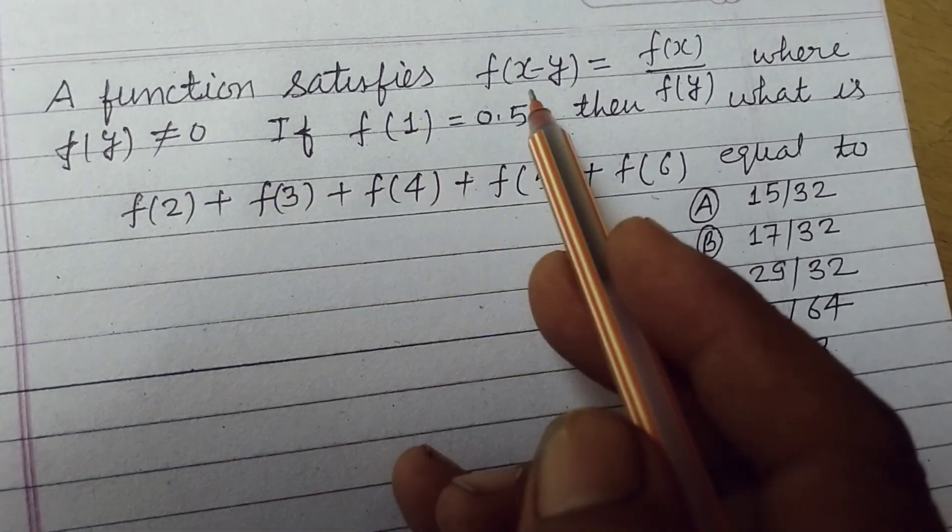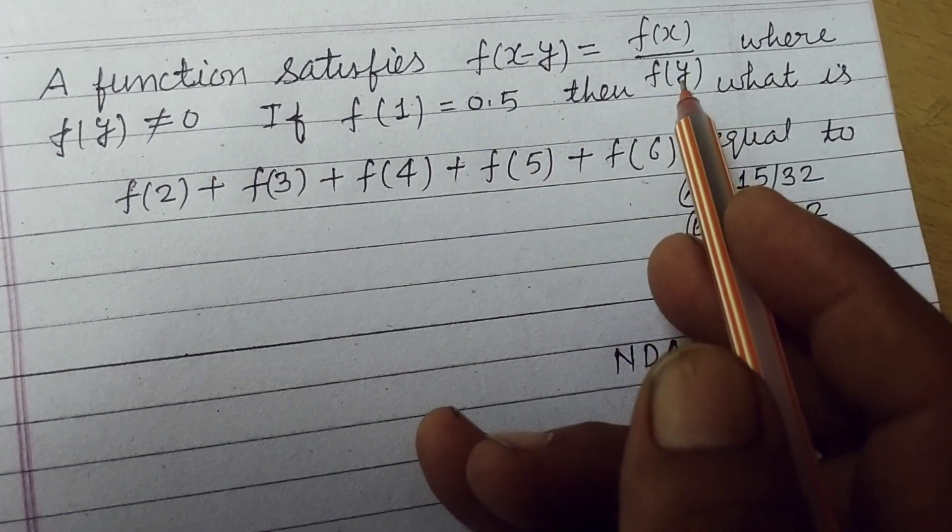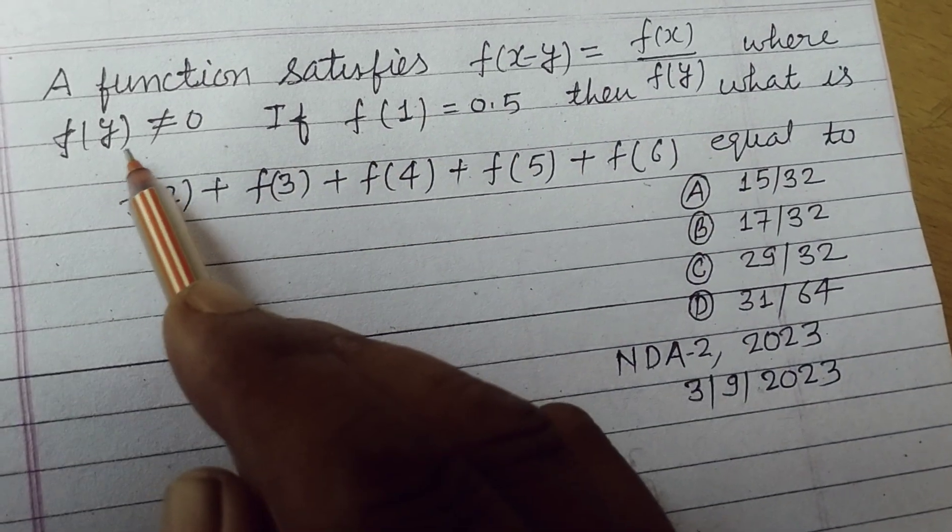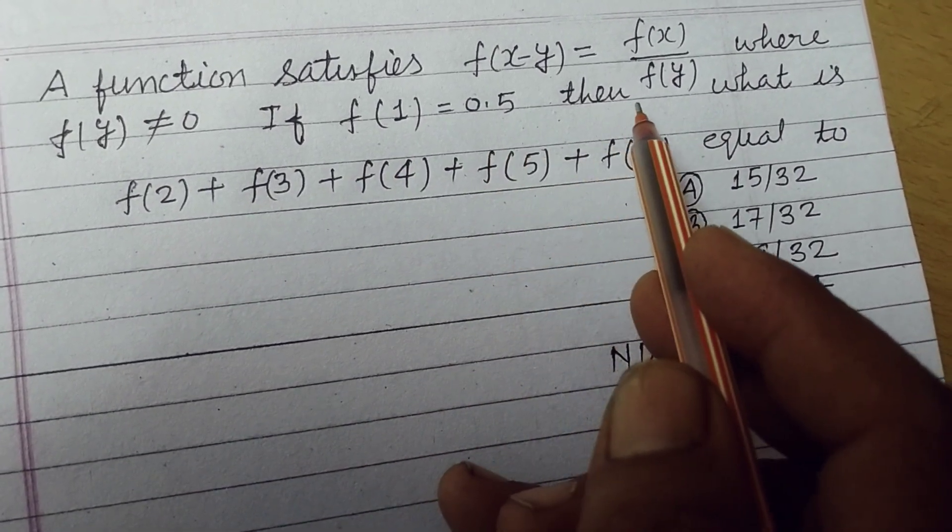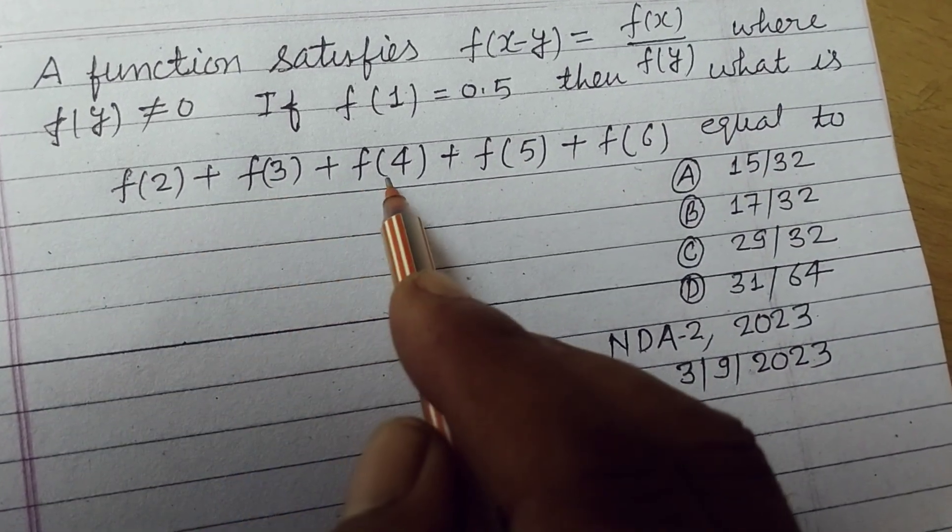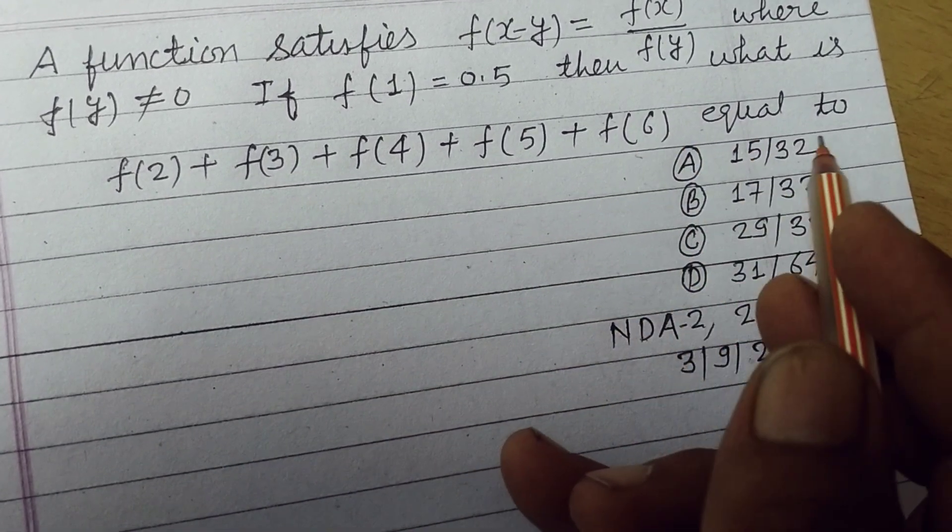A function satisfies f(x-y) equal to f(x) over f(y) where f(y) doesn't equal to 0. If f(1) equal to 0.5, then what is f(2) plus f(3) plus f(4) plus f(5) plus f(6) equal to.